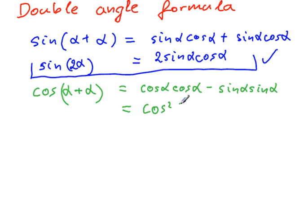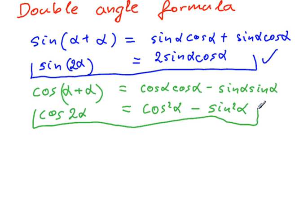So this is cos squared alpha minus sine squared alpha. Now for cosine of the second angle, you will see two other variations.